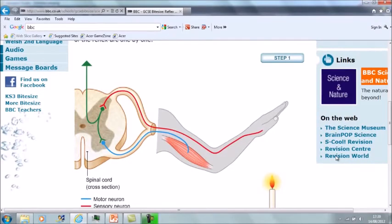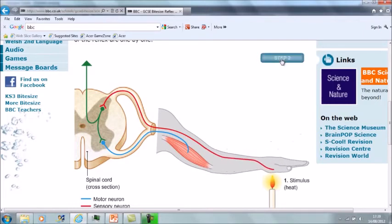So with the reflex arc, the first thing that happens is the hand comes into contact with something hot and in this case, something hot is the candle. The stimulus, which is the change in the environment—the heat in this case—is picked up by a receptor in the hand or a pain receptor in the hand, and this can then send the impulse up the sensory neuron towards the central nervous system.